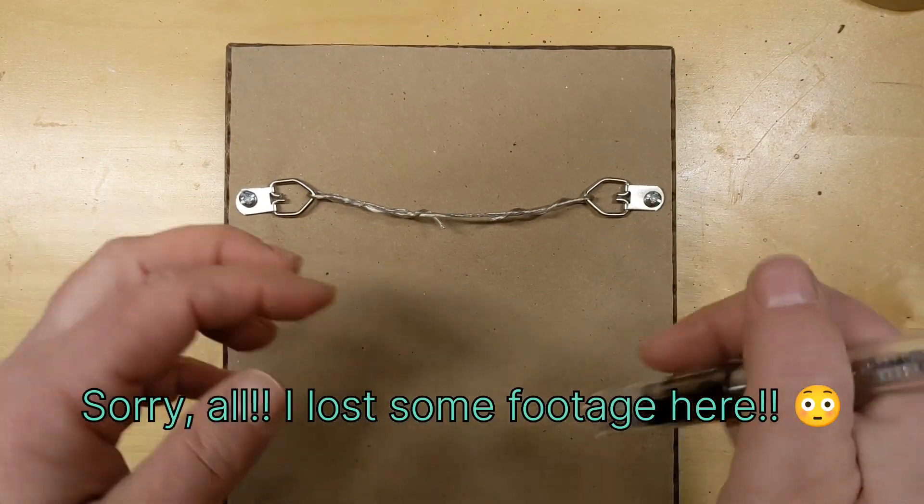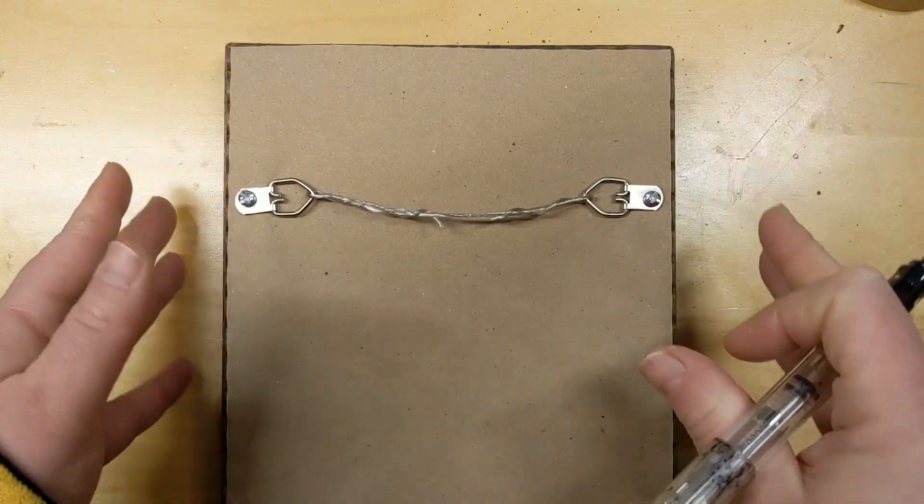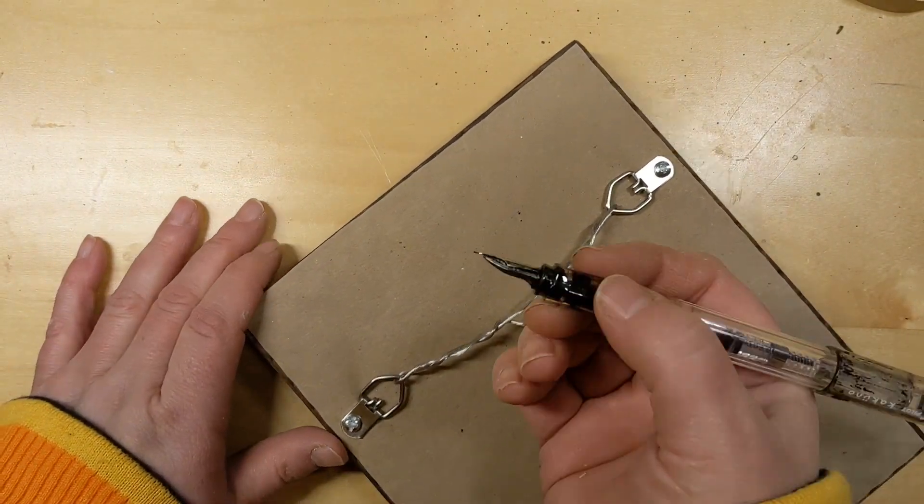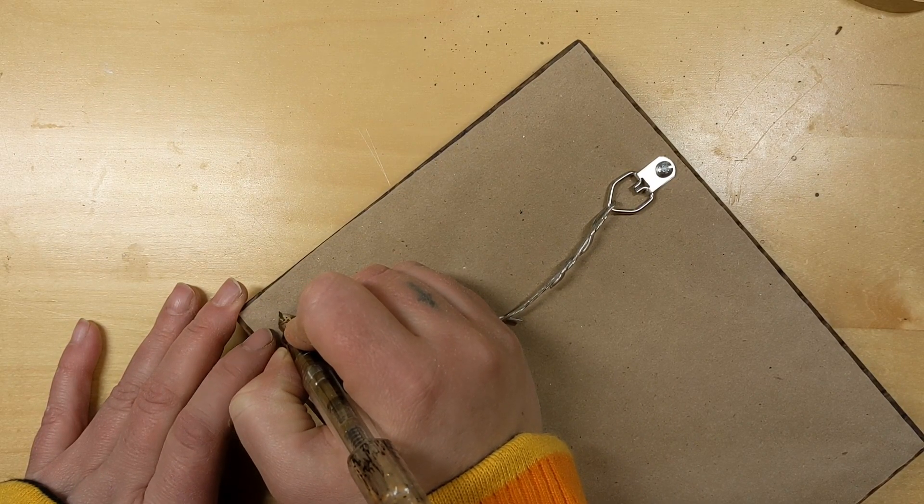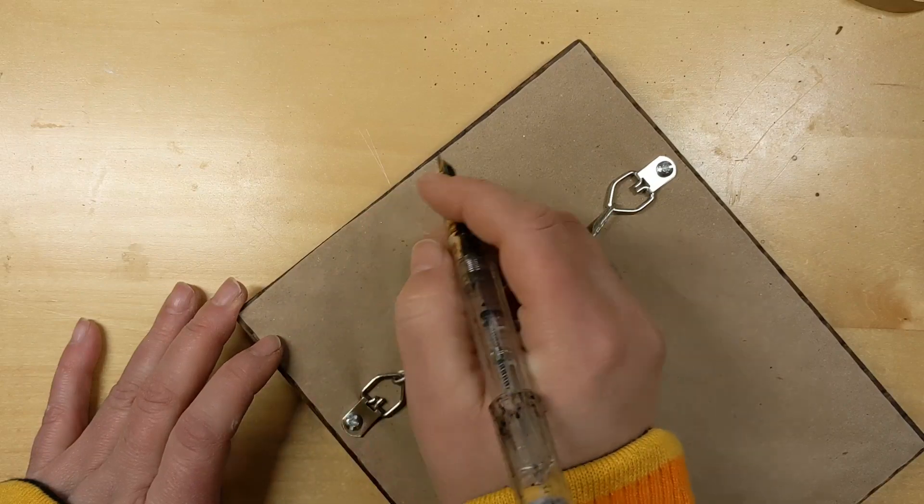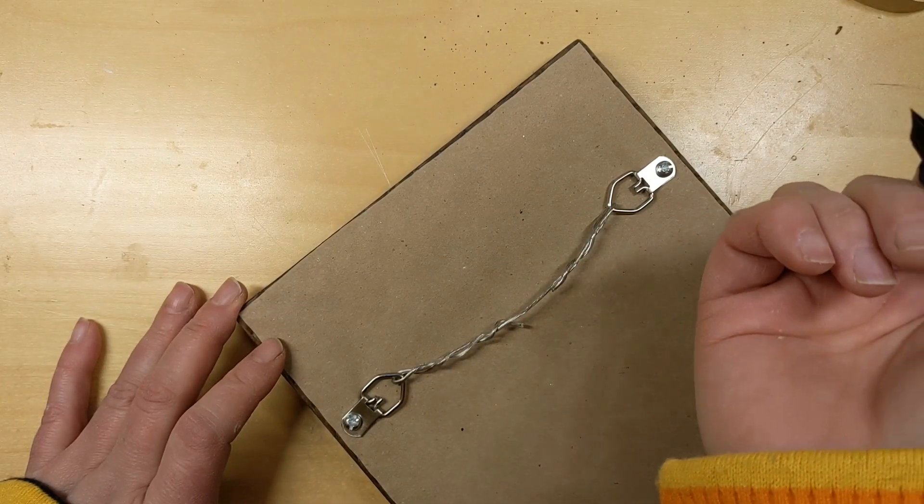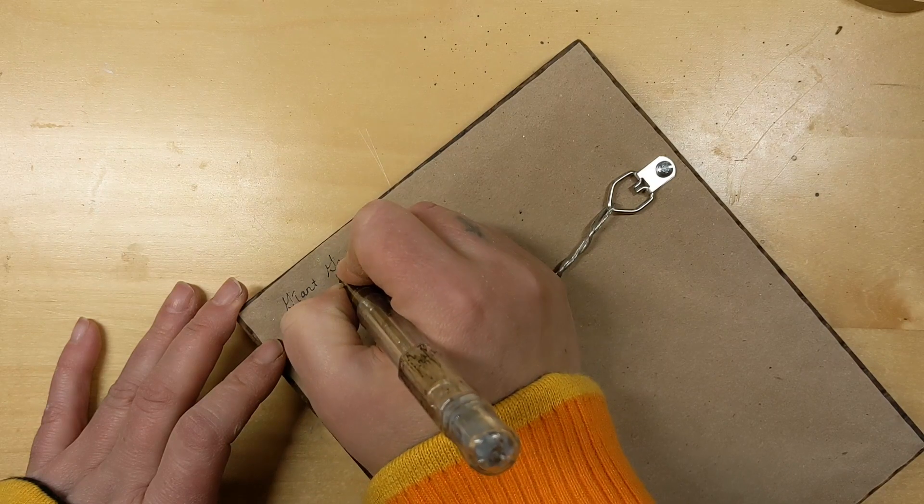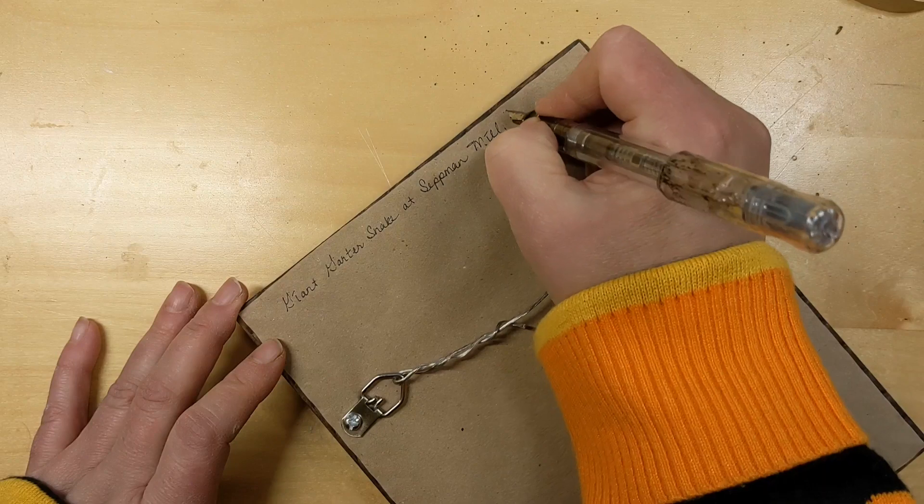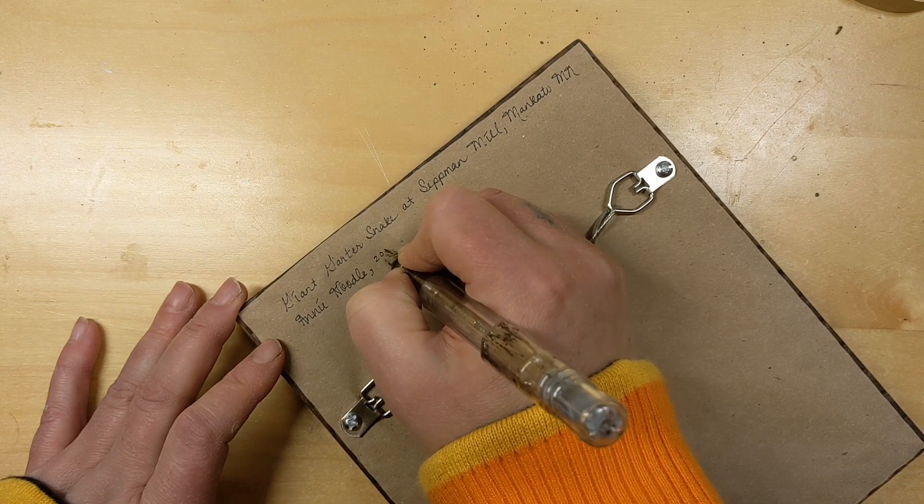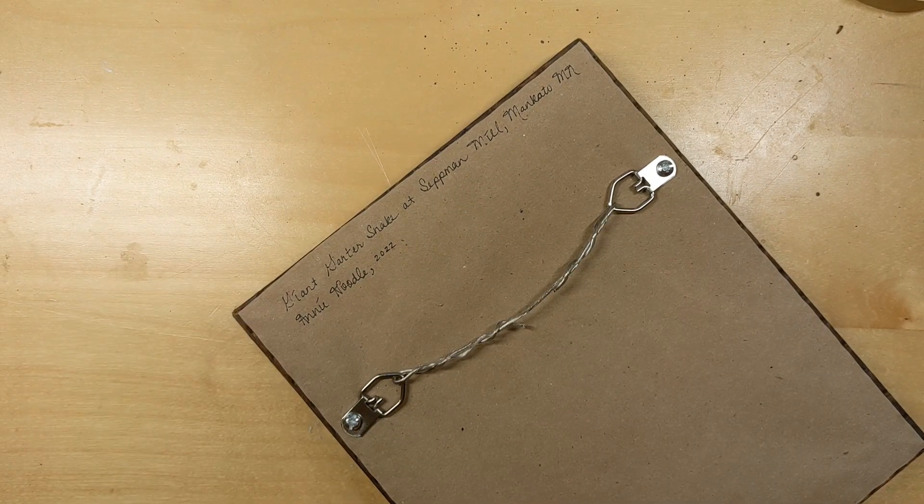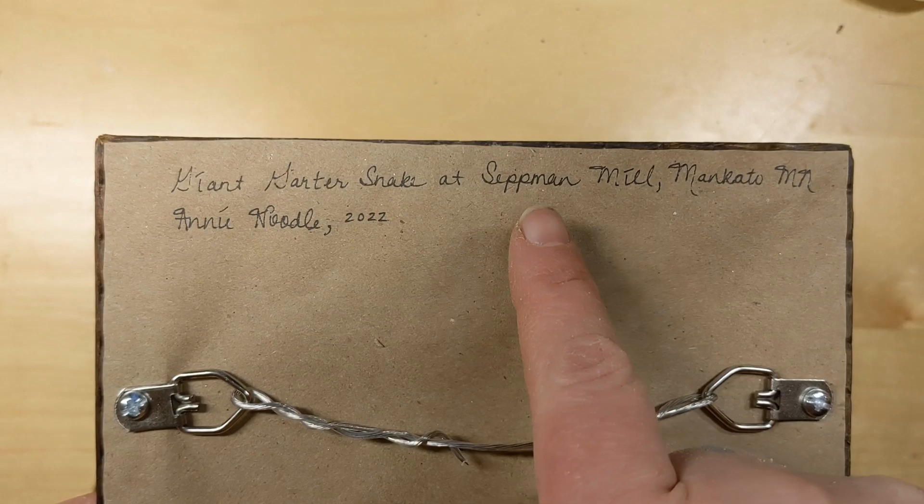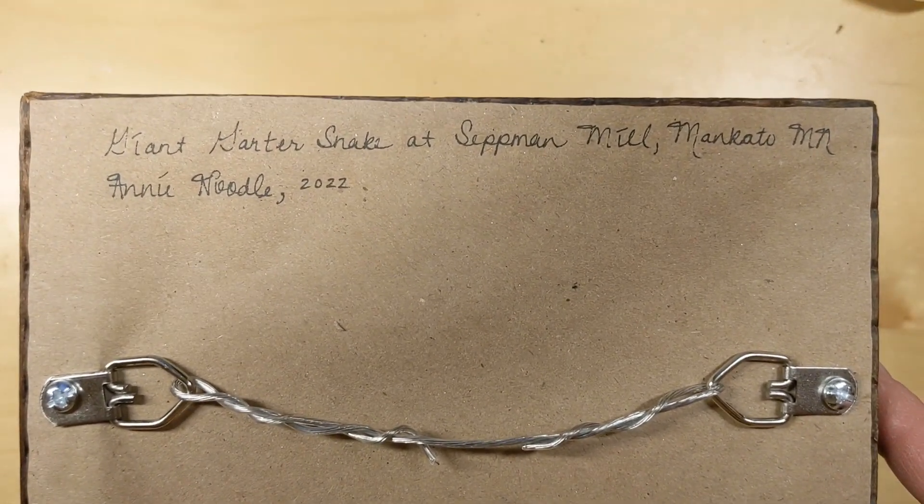This is all done, except the probably most satisfying part, which I think some artists don't always do, but I think it's really awesome. I have to put this at an angle because it involves me writing. I am going to put the title and the date and my name on the back because if this ever makes it back into a thrift store with my art in it, somebody's going to want to know who made it. Like I said, this is part of a series. This is the giant garter snake at Setman Mill in Mankato, Minnesota, which is where I live. And that is my name.